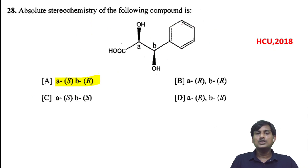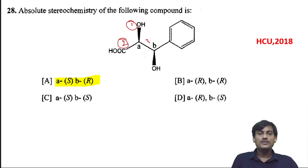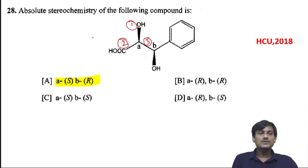Absolute stereochemistry of the following compounds: for compound A, let us take the priorities — OH gets first priority, COOH gets second priority, and the remaining fragment gets third priority. Hydrogen is below the plane; when you connect 1, 2, 3, you get anti-clockwise, and since hydrogen is below the plane, the configuration is S.